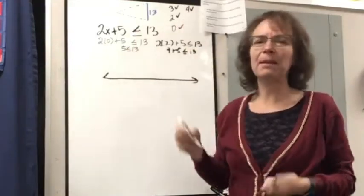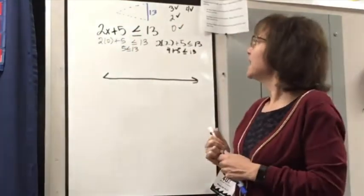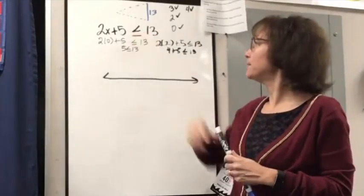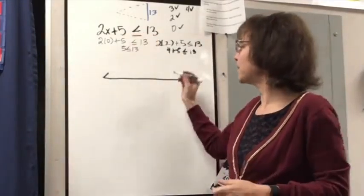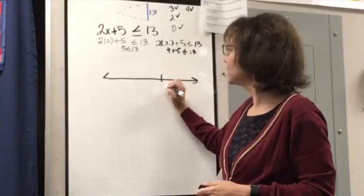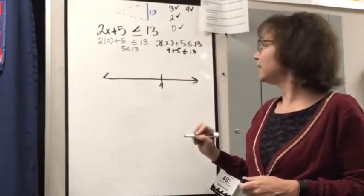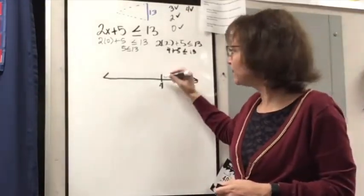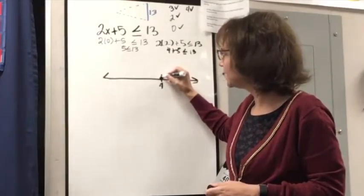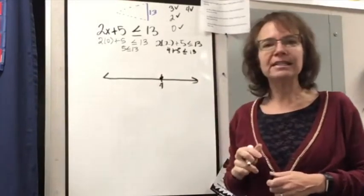In fact, once we get past 4, that value is going to be too much and it's not going to make this true. So I know 4 is my boundary point right here. So I'm going to go ahead and put a 4 right here. And it can be 4. And since it can be 4, I can fill in that circle to say 4 is included. It doesn't just get really close to 4.